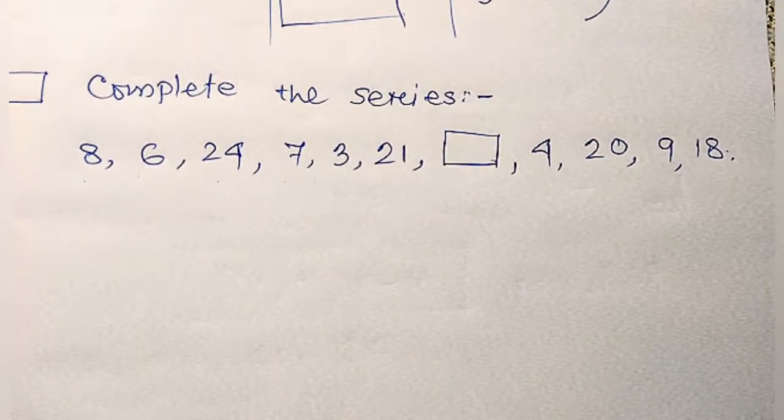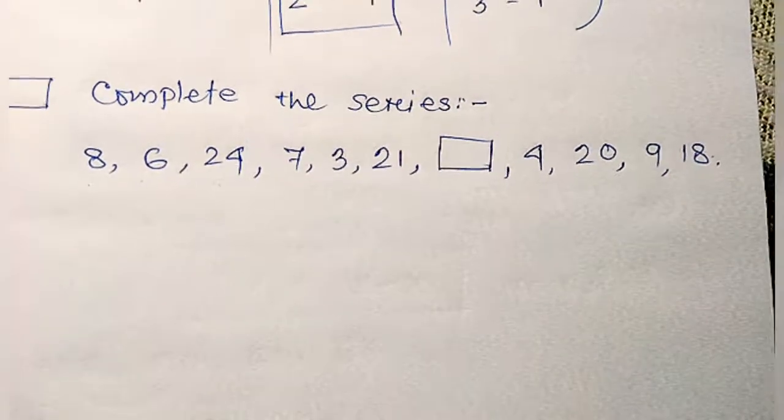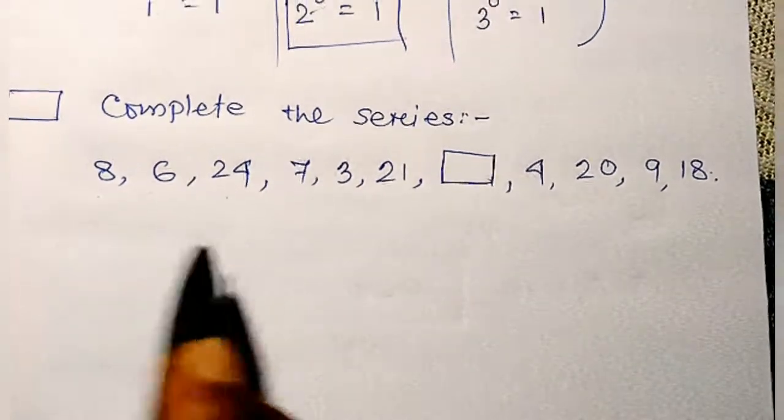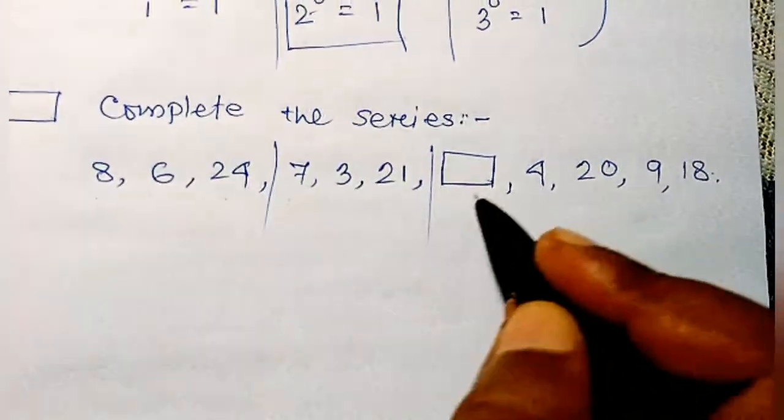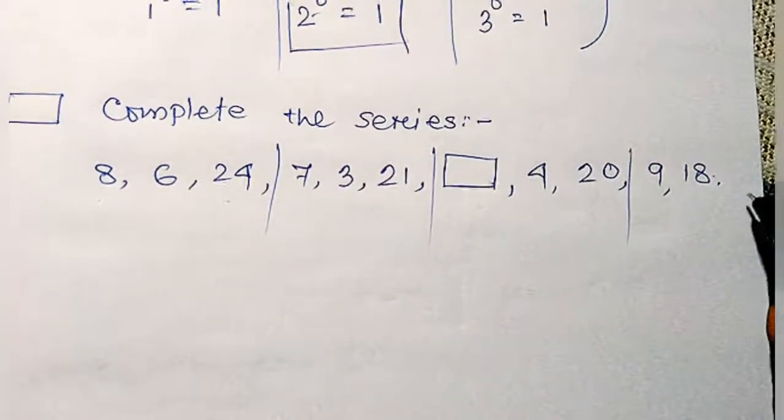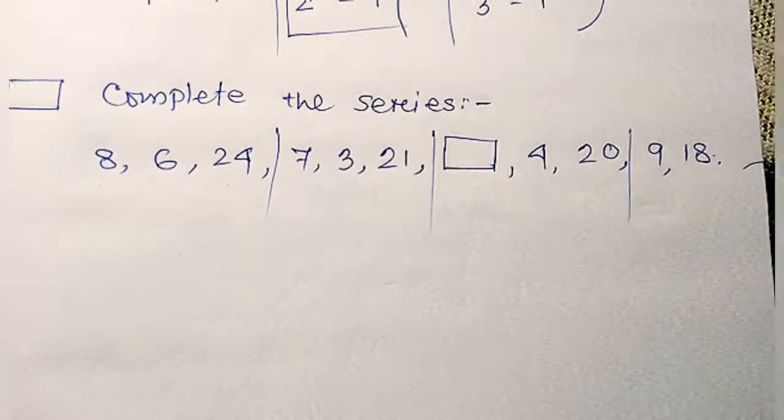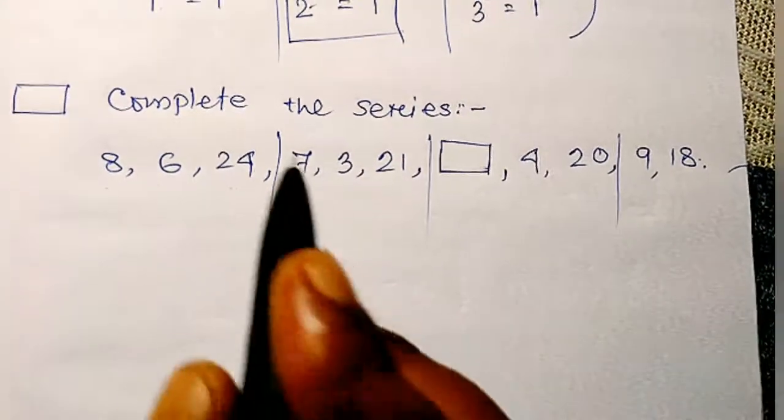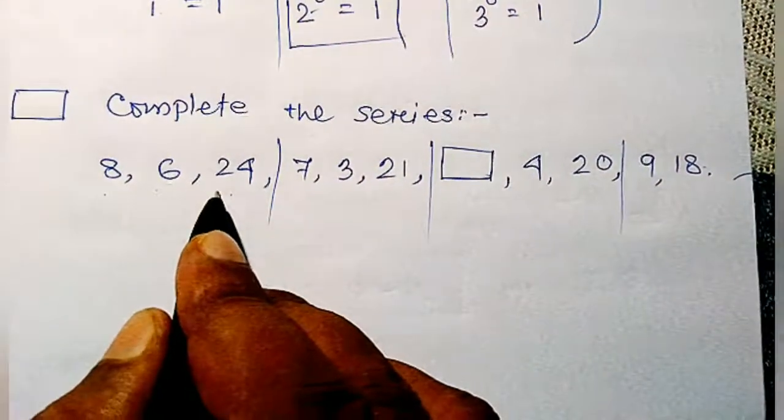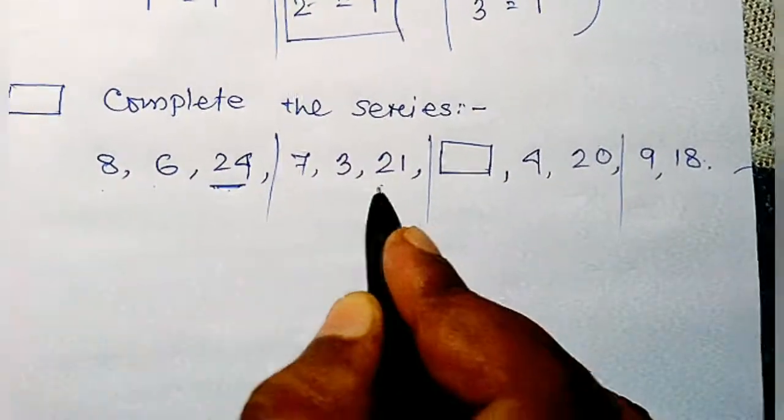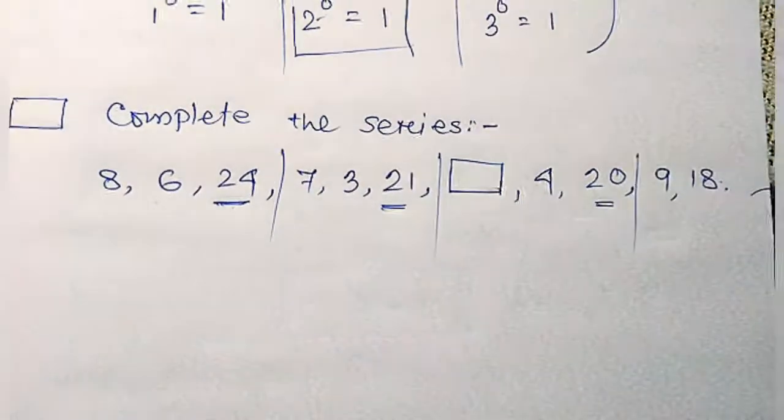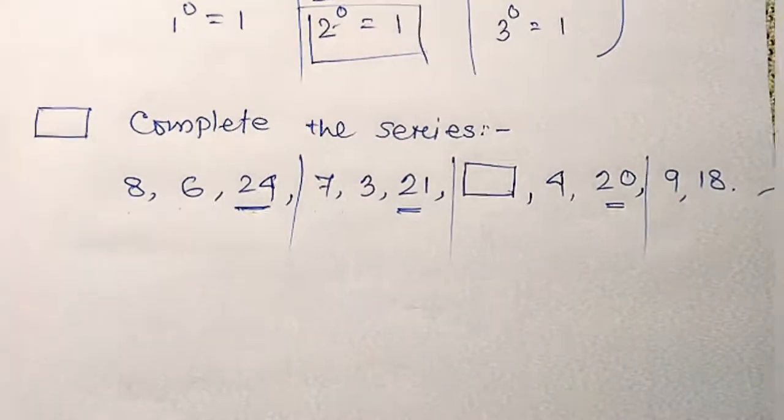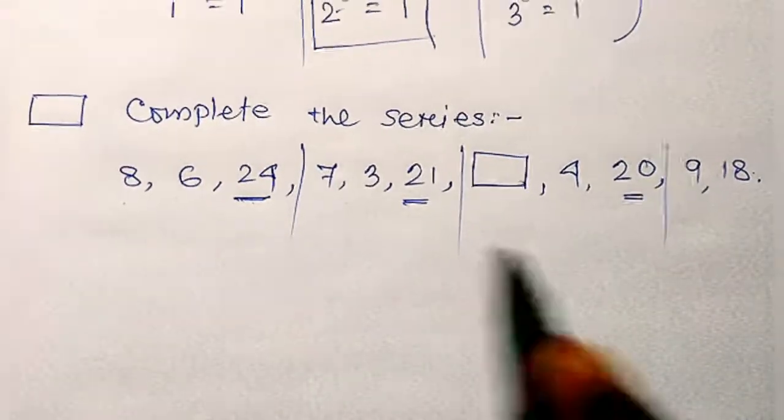...can be separated into three parts. Here: 8, 6, 24; 7, 3, 21; dash, 4, 20; and 9, 18, dash. And look, the third number of every section is the LCM of the first numbers.